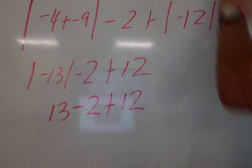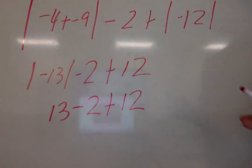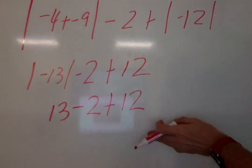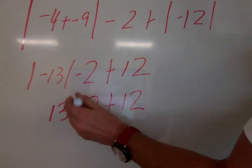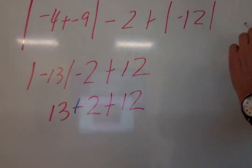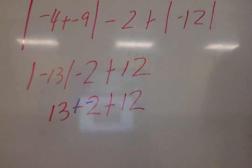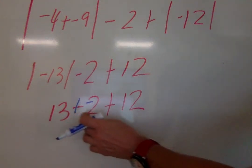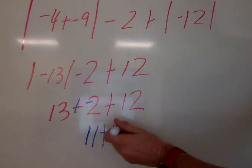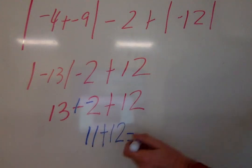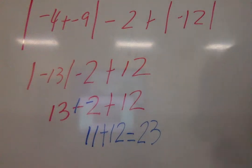We've taken care of everything we need to underneath the absolute value signs. Now we can work on solving our problem. So we have 13 minus 2 plus 12. We can do that. Let's change the subtraction to plus, and the positive 2 to negative 2. So 13 plus negative 2 is 11 plus 12. So our answer is 23.